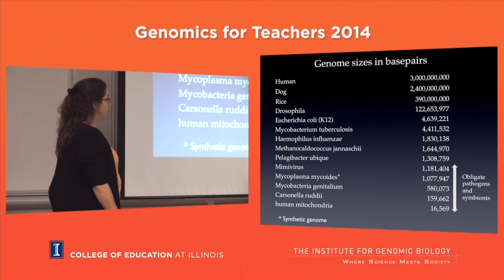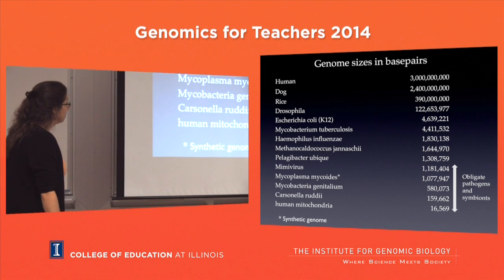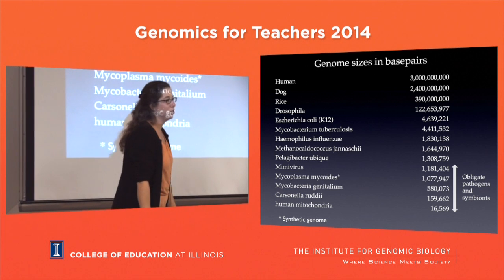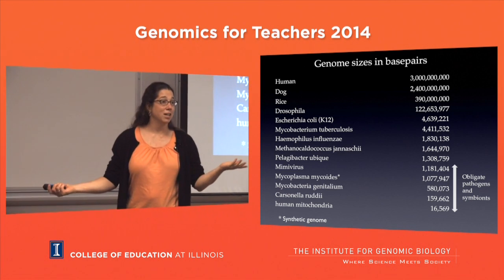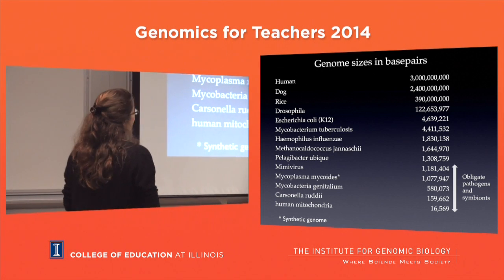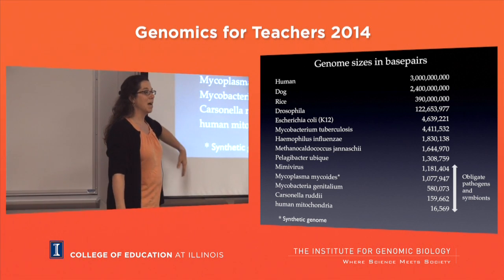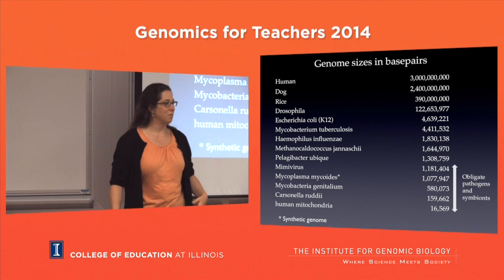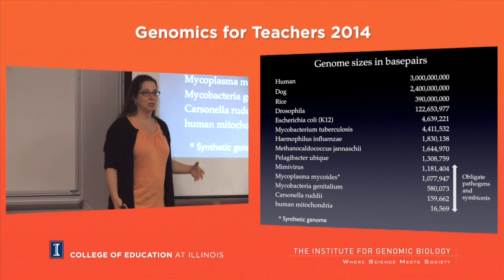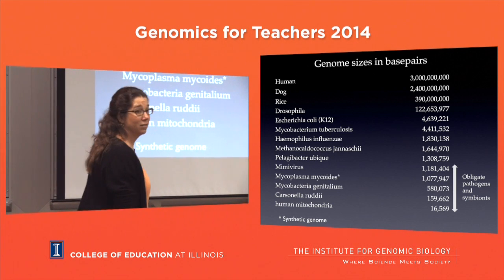Obligate pathogens or symbionts tend to have smaller genomes because they're basically offloading extra stuff they needed to live in the environment. Looking at genomes has shown us a little about how genomes evolve - not just who they are but how they evolve. These guys living within organisms are able to delete genes and it doesn't matter. Deletion is a big part of evolution of these organisms.